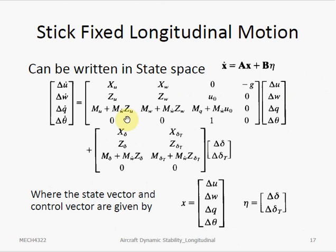This is the state matrix A, and the input matrix B. We can see that the matrices A and B contain only the stability derivatives of the related forces and moments.